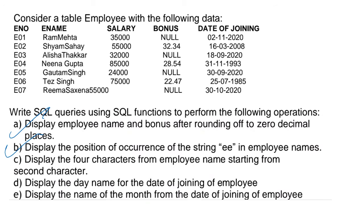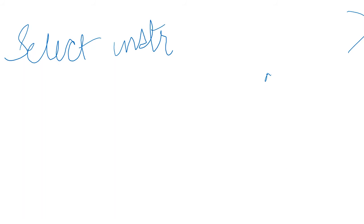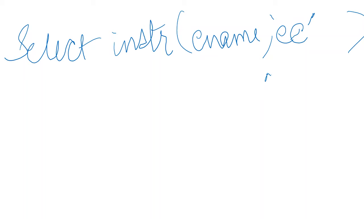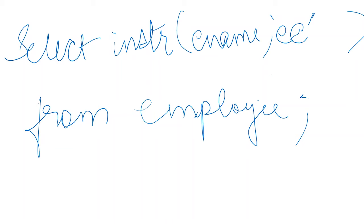The second question is: display the position of occurrence of the string 'ee' in employee names — where double 'ee' is coming from. There are three questions in one paper using INSTR; you will score three marks if you know the INSTR concept properly. So we'll write: SELECT INSTR(ename, 'ee') FROM employee. Note that 'ee' comes in quotation marks because it is a string, but ename is a column name so it won't come in quotation marks.